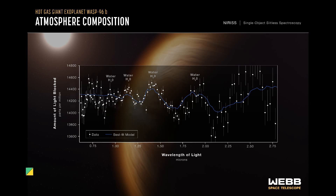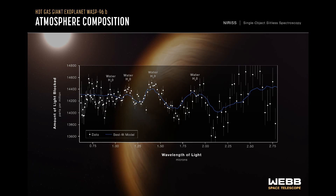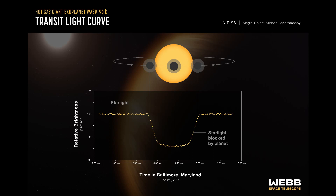Image number 4: the Exoplanet Spectrum from WASP-96b. Some of the Webb telescope's most stunning observations won't come from pretty images. Using instruments called spectrometers, Webb can determine what the atmospheres of distant alien worlds are composed of.